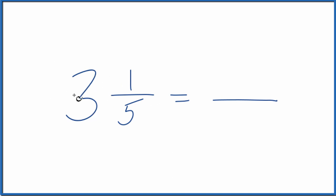We take the whole number 3 and multiply that by the denominator here. 3 times 5, that's 15. We add that to our numerator. 15 plus 1 is 16. And then you just bring the denominator across.